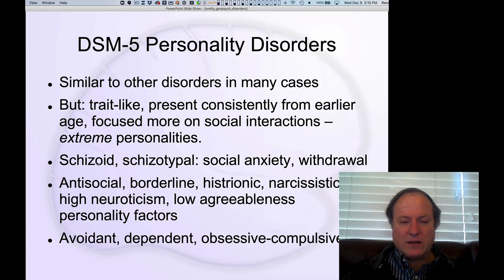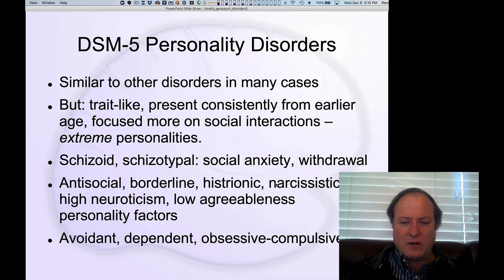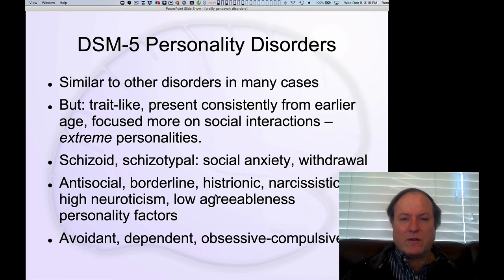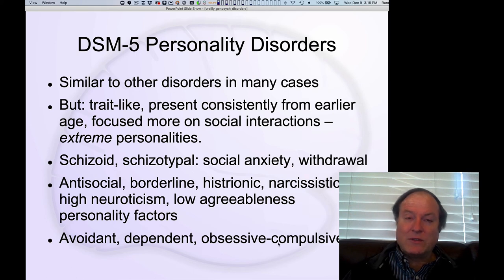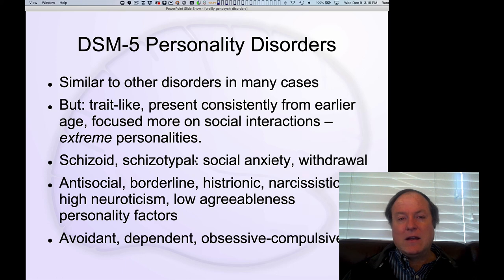Some of the personality disorder types include: schizoid and schizotypal — cases of high social anxiety and withdrawal; antisocial, borderline, histrionic, and narcissistic — associated with the personality variable of neuroticism and also affecting agreeableness, which reflects social warmth or affiliation. Other personality disorders include avoidant, dependent, and obsessive-compulsive. It's a little unclear exactly where the boundaries are between, say, OCD and obsessive-compulsive personality disorder, or schizoid types and actual schizophrenia.